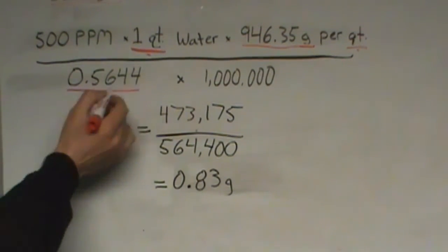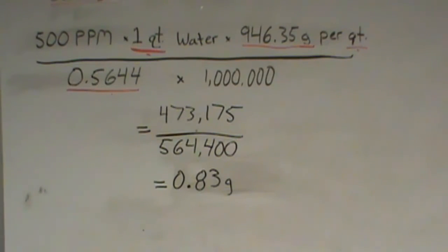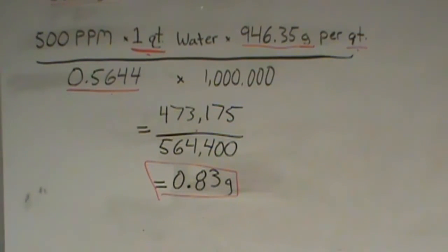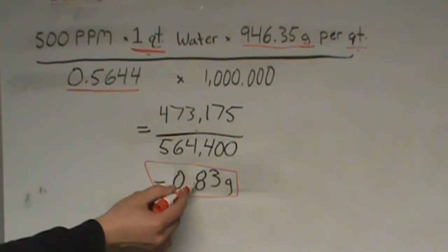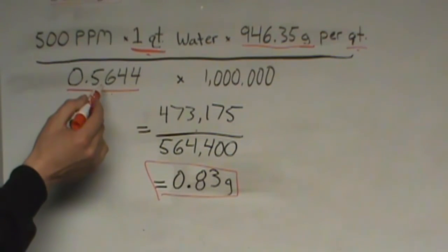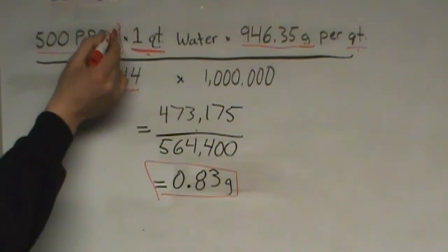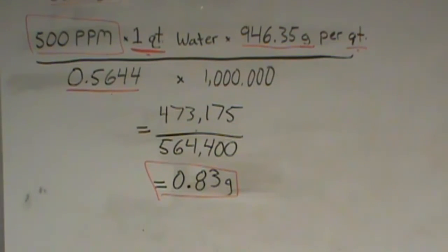I've also changed this down here because I do not have 70% calcium hypochlorite available to me. I only have 56.44%. Again, this is expressed in decimal format. I'm still multiplying that by one million. And the end result is 0.83 grams, meaning that I must add 0.83 grams of 56.44% calcium hypochlorite to one quart of water. And that will provide us the 500 ppm chlorine stock solution, which we then can employ to disinfect contaminated water.